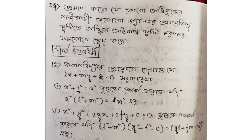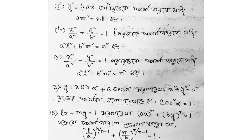Number 2 says: x squared plus y squared plus 2gx plus 2fy plus c equals 0, the circle is touched if l squared plus m squared into (g squared plus f squared minus c) equals (gl plus fm minus n) whole squared. Number 3: y squared equals 4ax; the circle is touched if am squared equals nl.